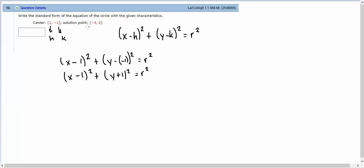In this particular problem we were given a solution point that we know negative 3, 2 is a point on the circle. So let's substitute negative 3, 2 into this equation that we've generated here.